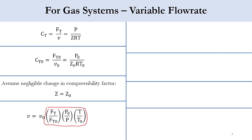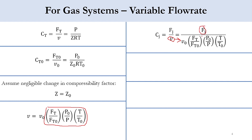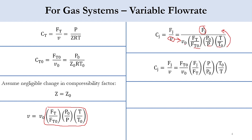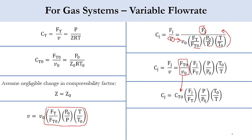For concentration of species J, C_J equals F_J over v. Substituting the expression for v, we get C_J equals (F_J times Ft0 times P times T0) divided by (v0 times P0 times T times Ft). Rearranging, Ft0 over v0 becomes Ct0. So C_J equals Ct0 times (Fj/Ft) times (P/P0) times (T0/T), where Ct0 is the total concentration at the inlet, Fj/Ft is the mole fraction of species J, P/P0 is the pressure ratio, and T0/T is the temperature ratio.